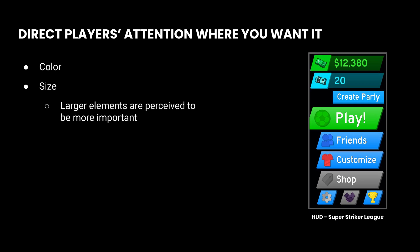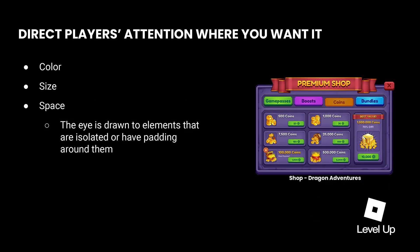In this example from Super Striker League's HUD, size and color are both used to direct players to the play button and to minimize the visibility of less important buttons like settings. Although there's still a lot going on, new players shouldn't have much trouble figuring out how to start a match and get to the fun quickly. Space is also an important element of visual design that influences what we pay attention to. Elements that are off on their own, surrounded by empty space, are visually interesting and draw the eye.